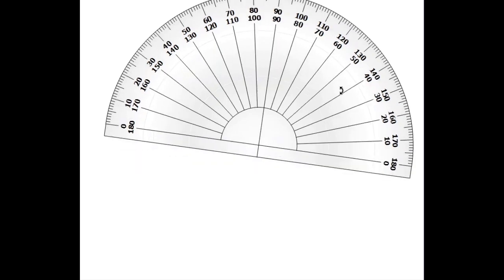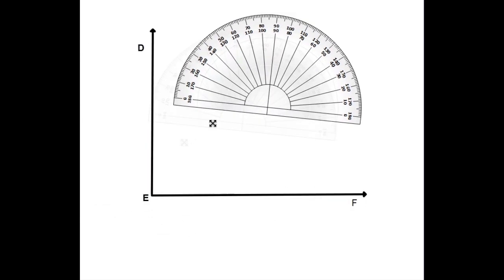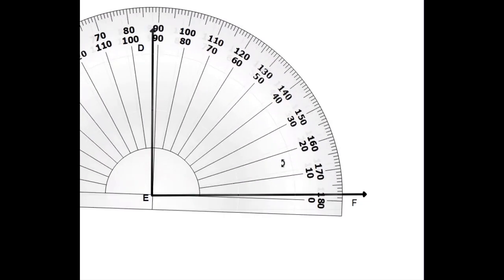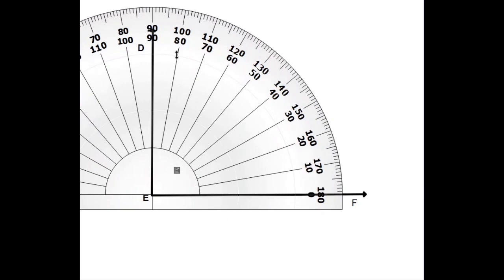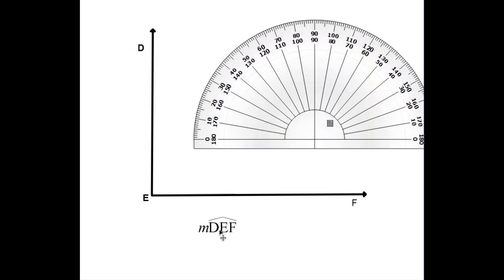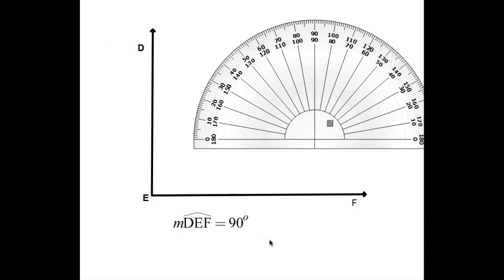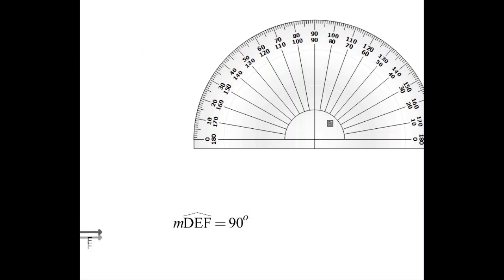Let's take another angle — angle DEF. It looks like 90 degrees. I align the protractor: 0, 10, 20, 30, 40, 50, 60, 70, 80, 90. The vertex E is at the center. So the measure of angle DEF — or FED — equals 90 degrees.